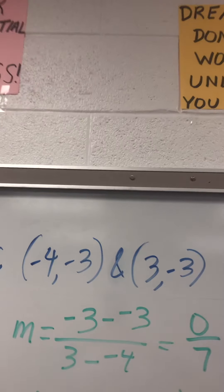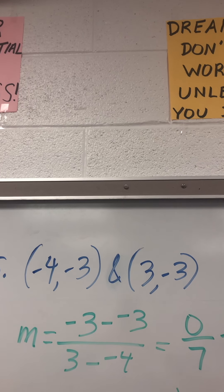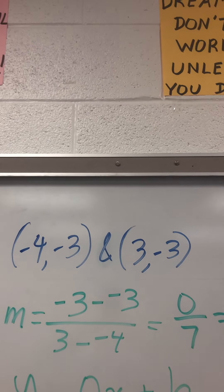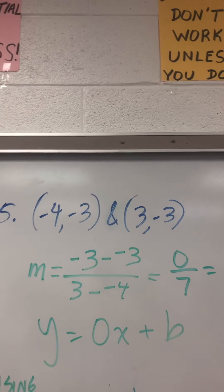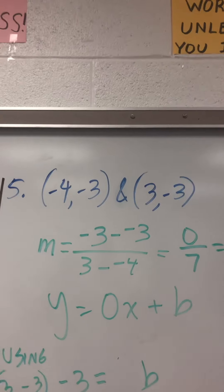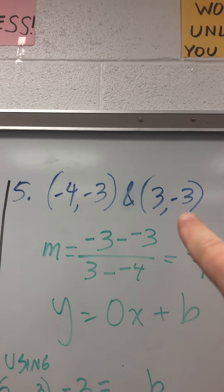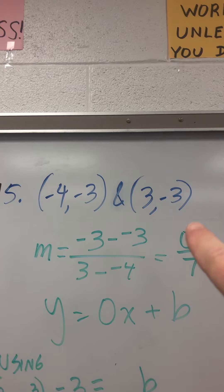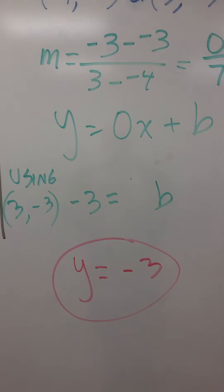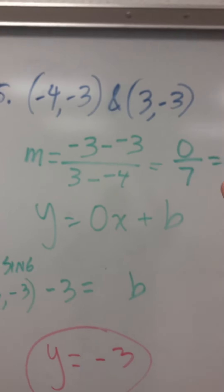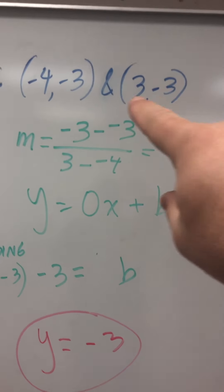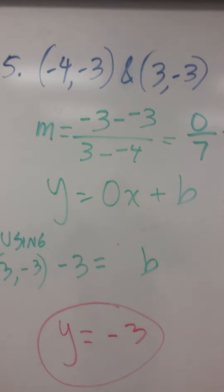Here I'm going to go negative 3 minus negative 3 over 3 minus negative 4. And I get m equals 0 over 7, which is 0. Whenever you get a slope of 0, notice that y is negative 3 both times. All you have to do is say y equals negative 3. That's it. Once you get a slope of 0 or you see that y is the same, just write y equals whatever that number is and you're done.